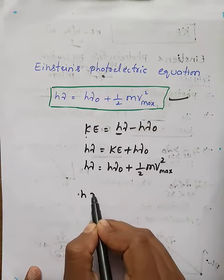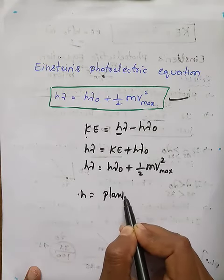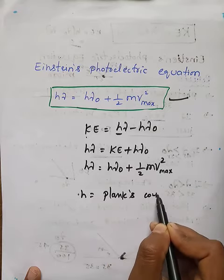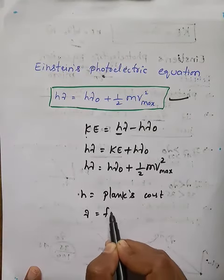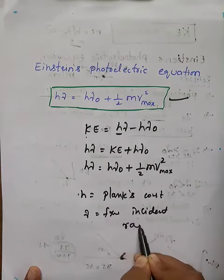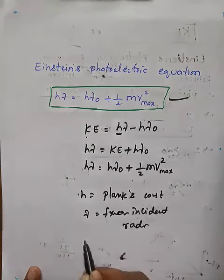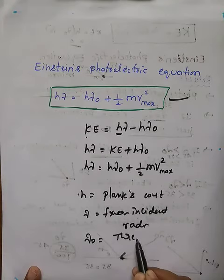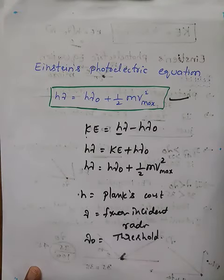Where h is Planck's constant, nu is the frequency of incident radiation, and nu naught is the threshold frequency.